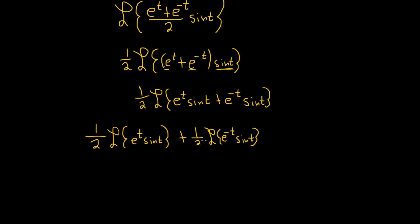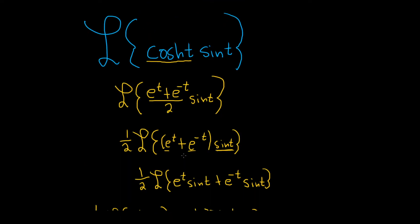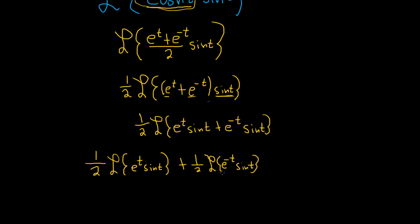Just a quick recap: we started off the problem by looking at the fact that it's hyperbolic cosine times sine. There's not really a nice formula for this in a textbook, so we used the definition of the hyperbolic cosine, pulled out the one-half, and then distributed and used the fact that the Laplace transform is linear. So now we're here.